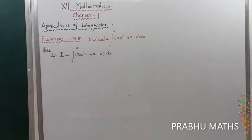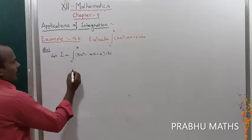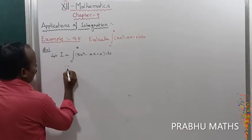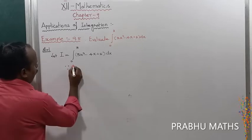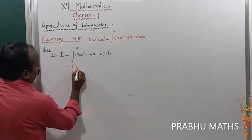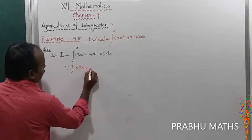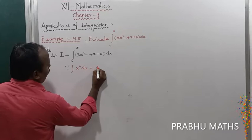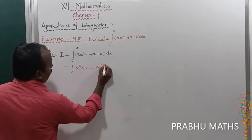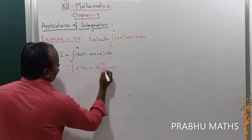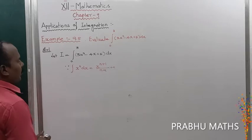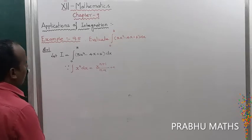By using the formula, the basic formula of integration is: the integral of x^n dx is equal to x^(n+1) divided by (n+1), plus c. That is the formula of integration.